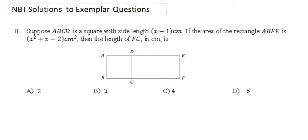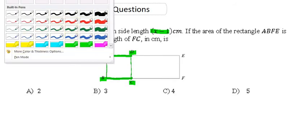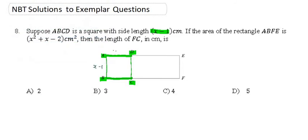Hey guys, so we're on to question 8 and it says, suppose ABCD is a square with side length x minus 1 cm. So we know that in a square all the sides are the same. So ABCD is a square and all four of these sides are going to be x minus 1.